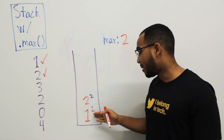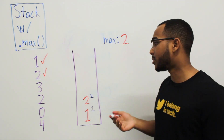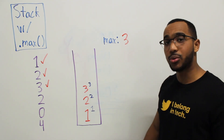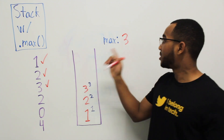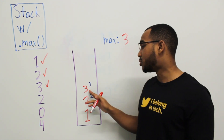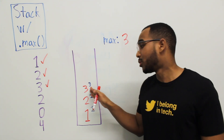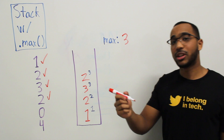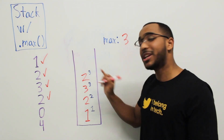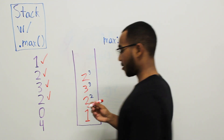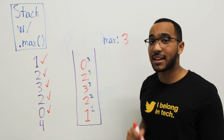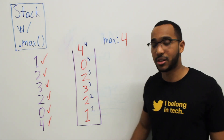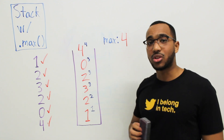We push zero — it doesn't beat the max, but we remember that the max below us is three. We push four — four beats the maximum, so it becomes the new max and remembers itself. Now when we pop four, I know four was the maximum — and when I'm at the state below, the cached max is three. I didn't lose it. We can pop again: constant time access. The max is three. Then two. Then one. This is a good solution.